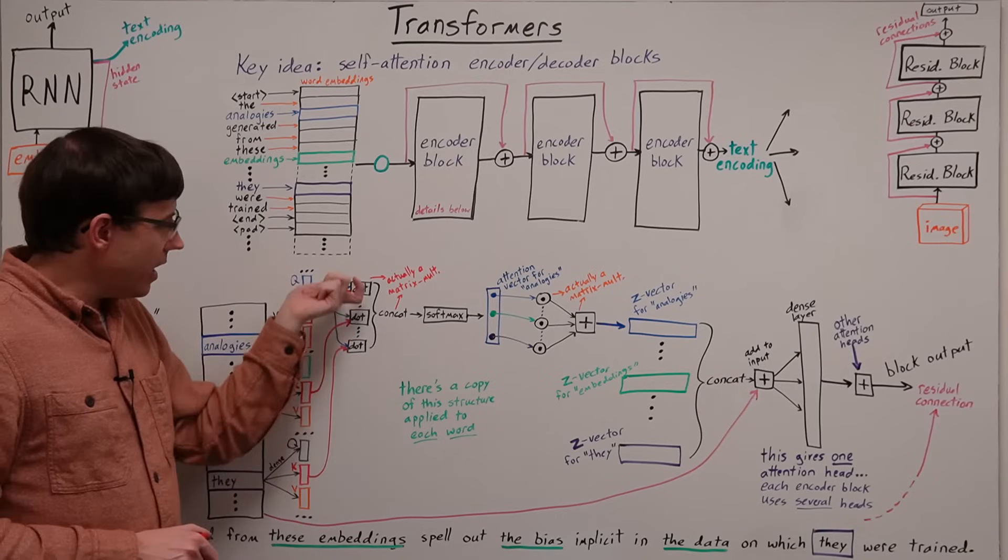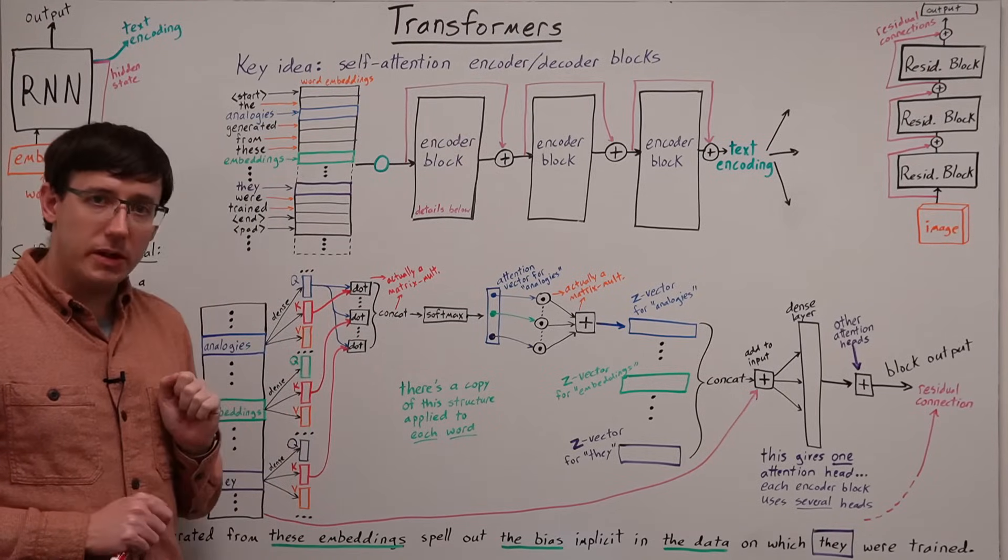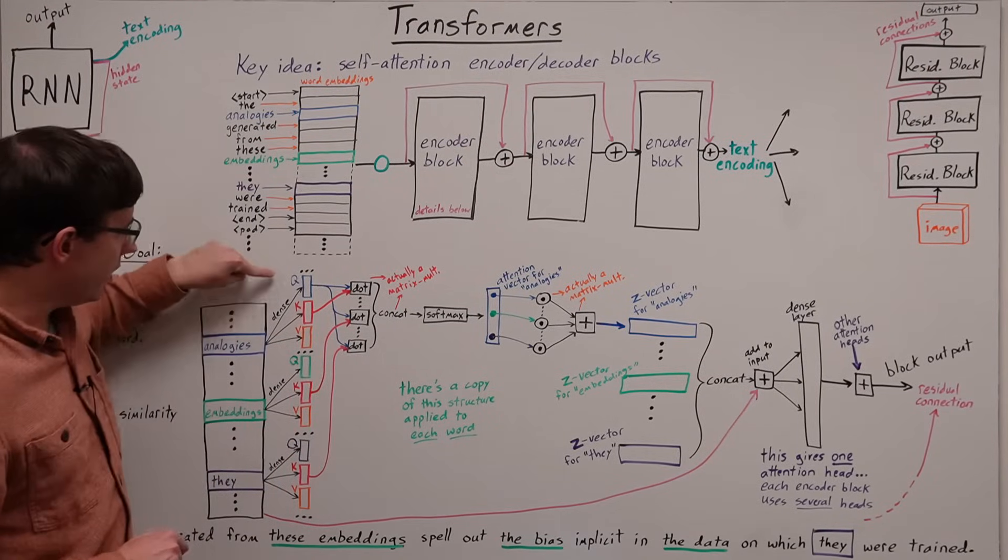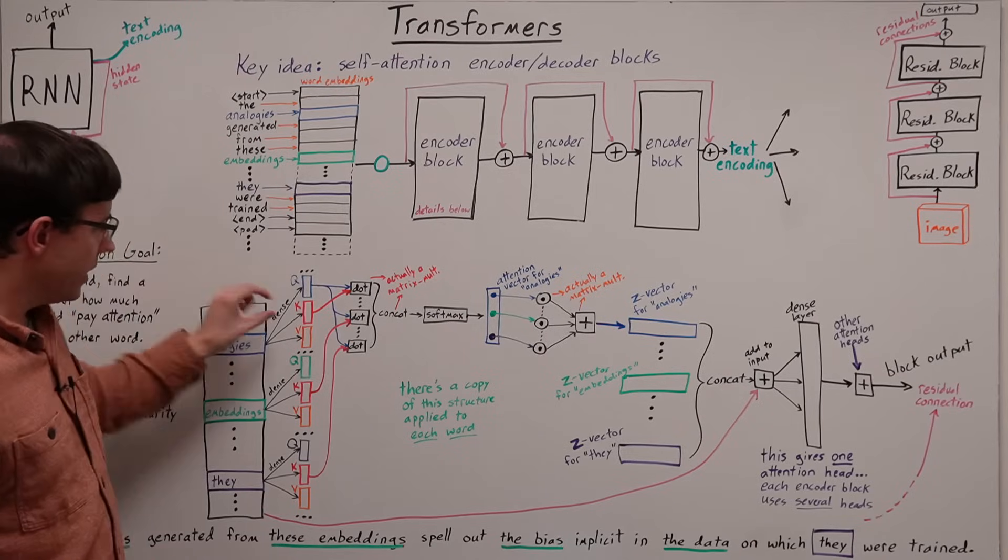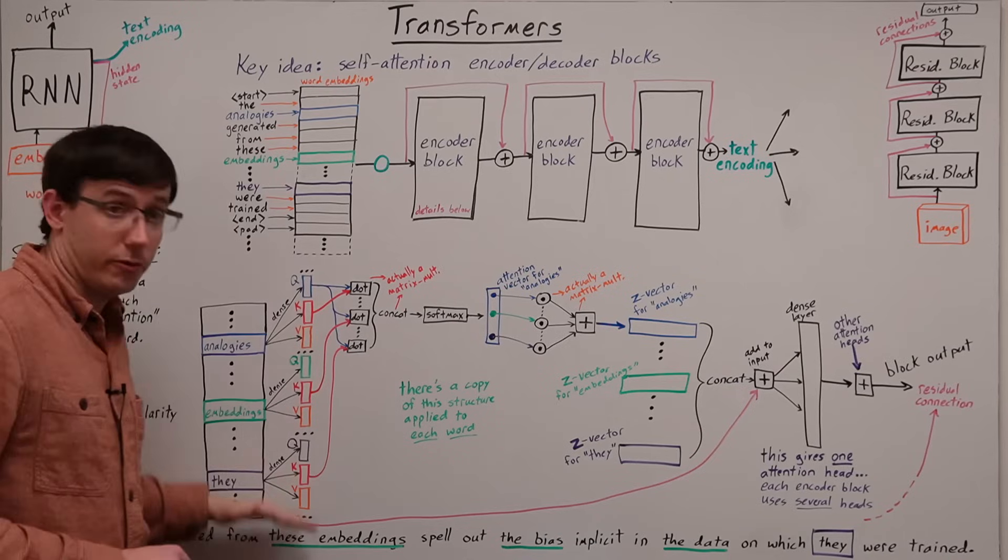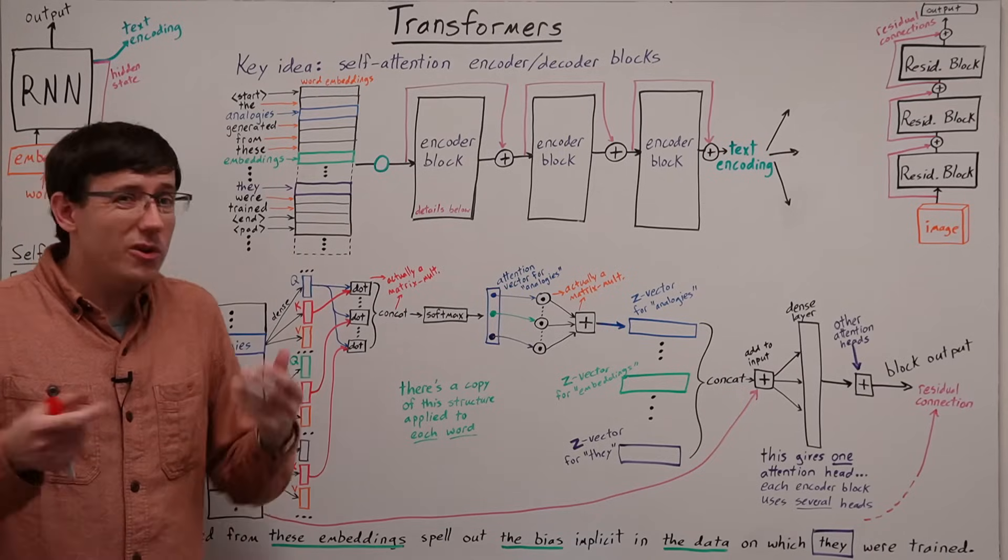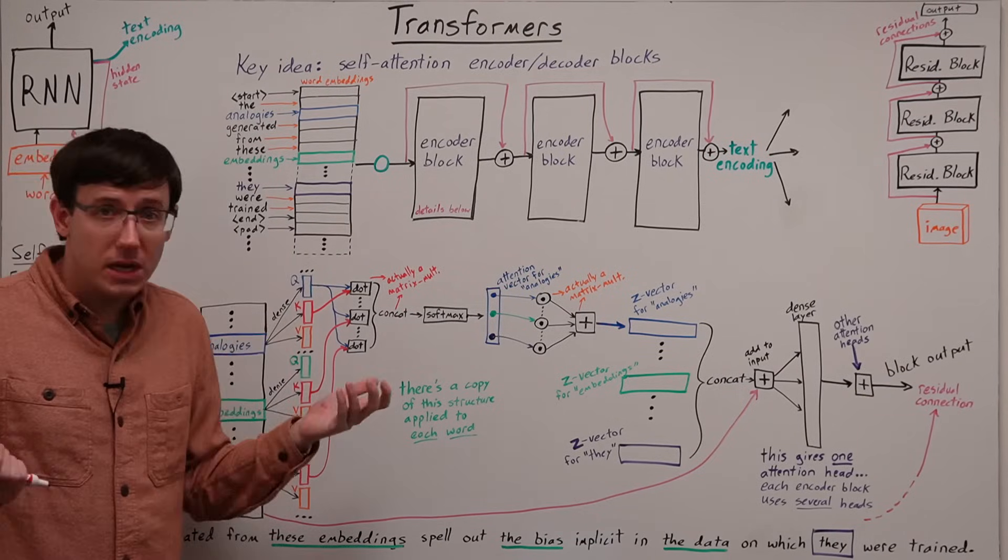And so we'll get a vector of similarity scores between the query vector for this word, and the key vectors for every other word. We don't know exactly what the q and k vectors mean,